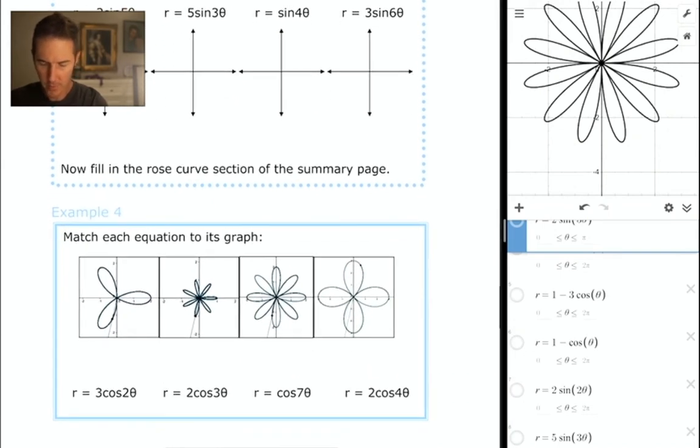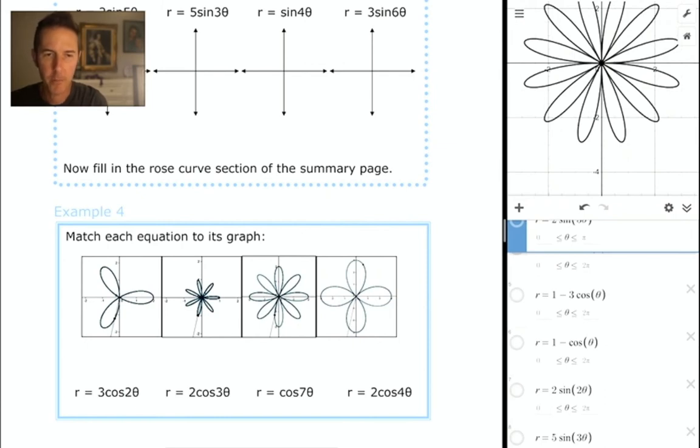And before we go on to the summary page, let's just do a little matching game here at the bottom of the screen. Let's look at the first equation, 3 cosine 2 theta. The 3 tells us the length of our petals, and the 2 in front of the theta, since it's even, means we're going to have 4 petals. That makes it pretty clear that it matches with this graph. The coefficient on theta for the second equation says 3 theta, which means there will only be 3 petals. 7 theta gives us 7 petals, and finally, the 4 theta means 8 petals.